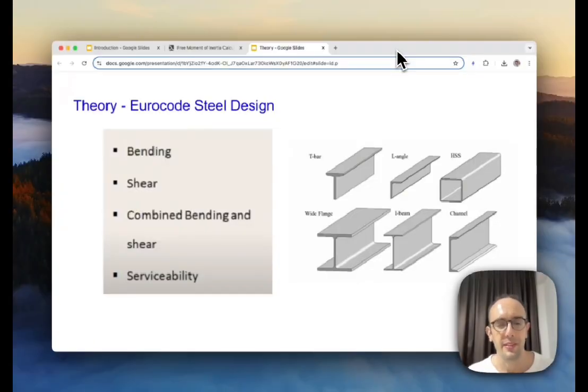Okay so now let's take a look at the theory behind Eurocode steel design. So as we were looking at in the previous example you could see various different checks that need to be done to follow the Eurocode regulations. So this can include bending, shear, combined bending and shear, also serviceability and that lateral torsion buckling. But the one I'm going to focus on just for this theory session is talking about bending and if you find this useful I can also produce some videos on the other checks as well.